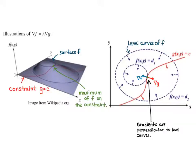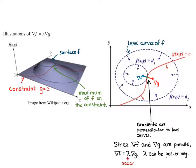They're each perpendicular to their respective level curve, and since gradient of f and gradient of g are parallel, gradient of f equals lambda times gradient of g. In this case they go in opposite directions, so lambda would be negative — but lambda can be positive or negative in order to make the equality true.